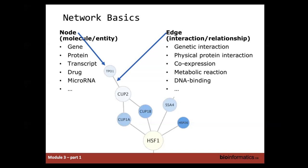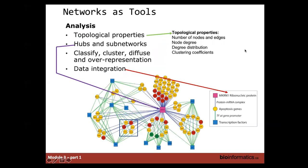Some features of networks that we like to look at are the topological features — the general trends in networks, including the number of nodes and edges. We can look at the node degree, which is the number of connections any given node has, as well as the degree distribution across the network — certain areas may have much higher node degrees. We can also look at clustering coefficients, how genes cluster together. These are just different topological features we can take from the network.